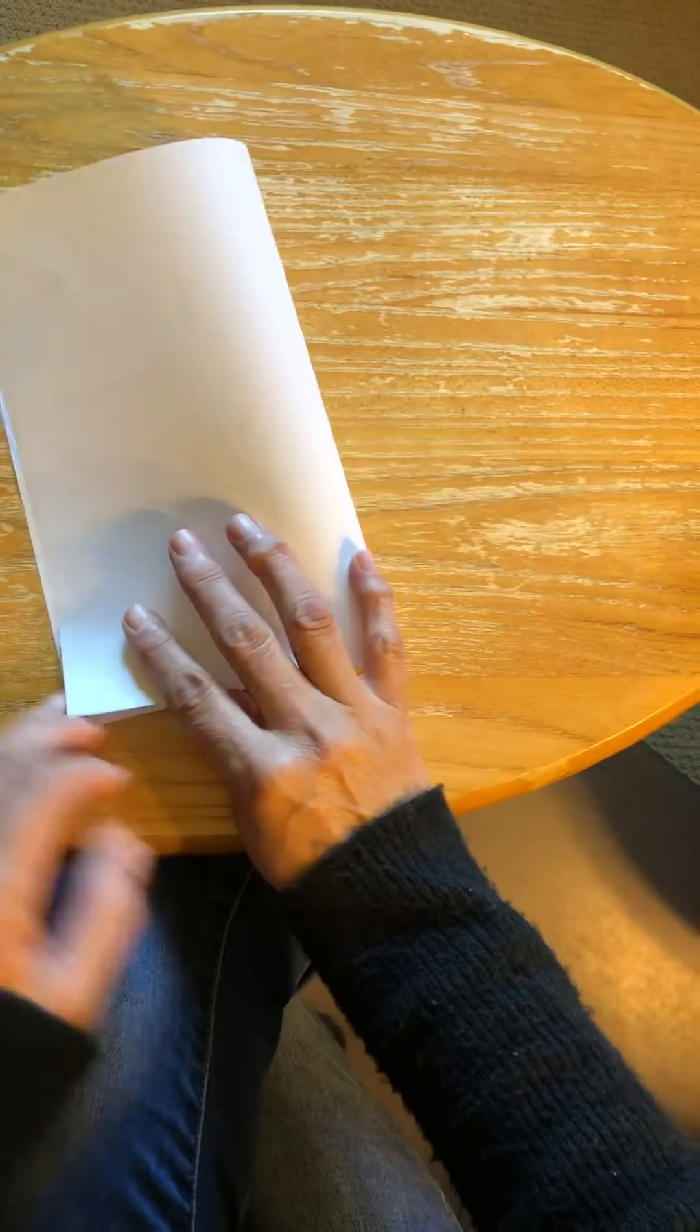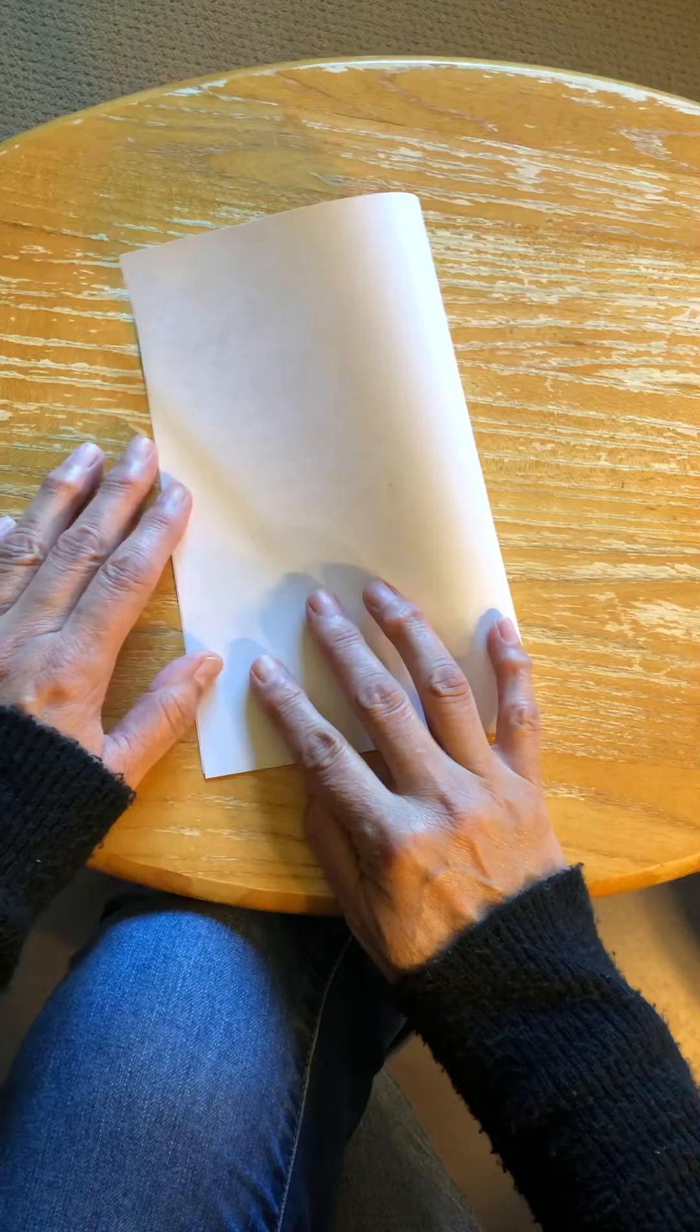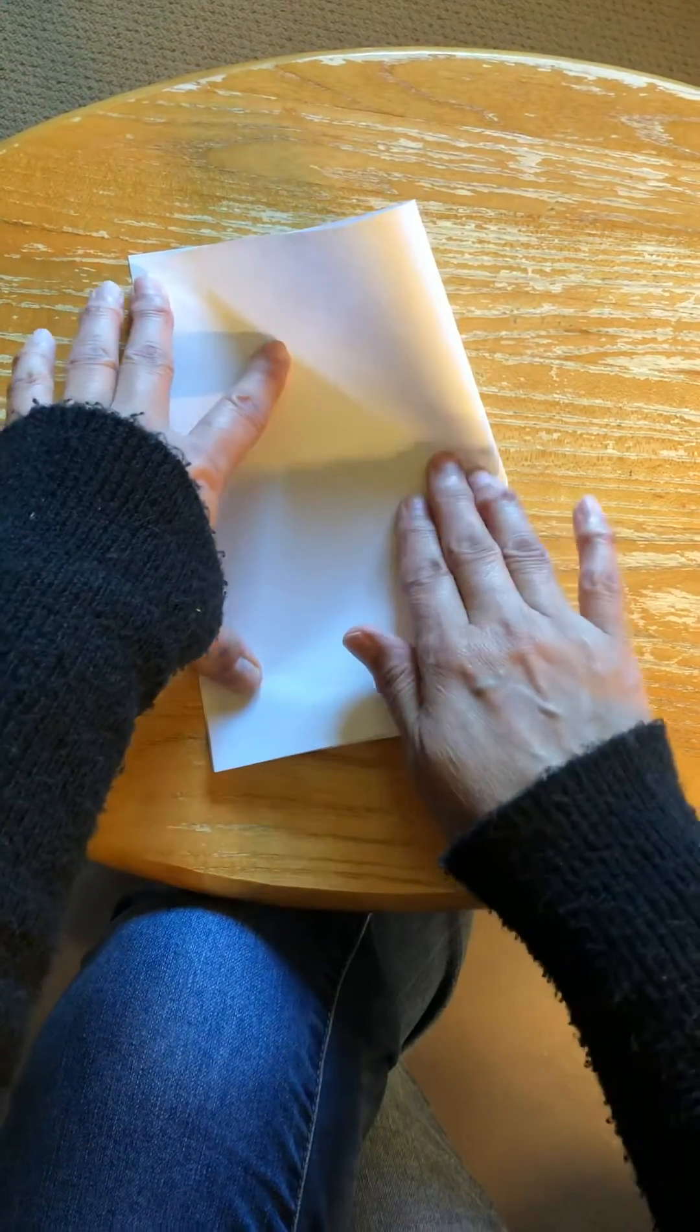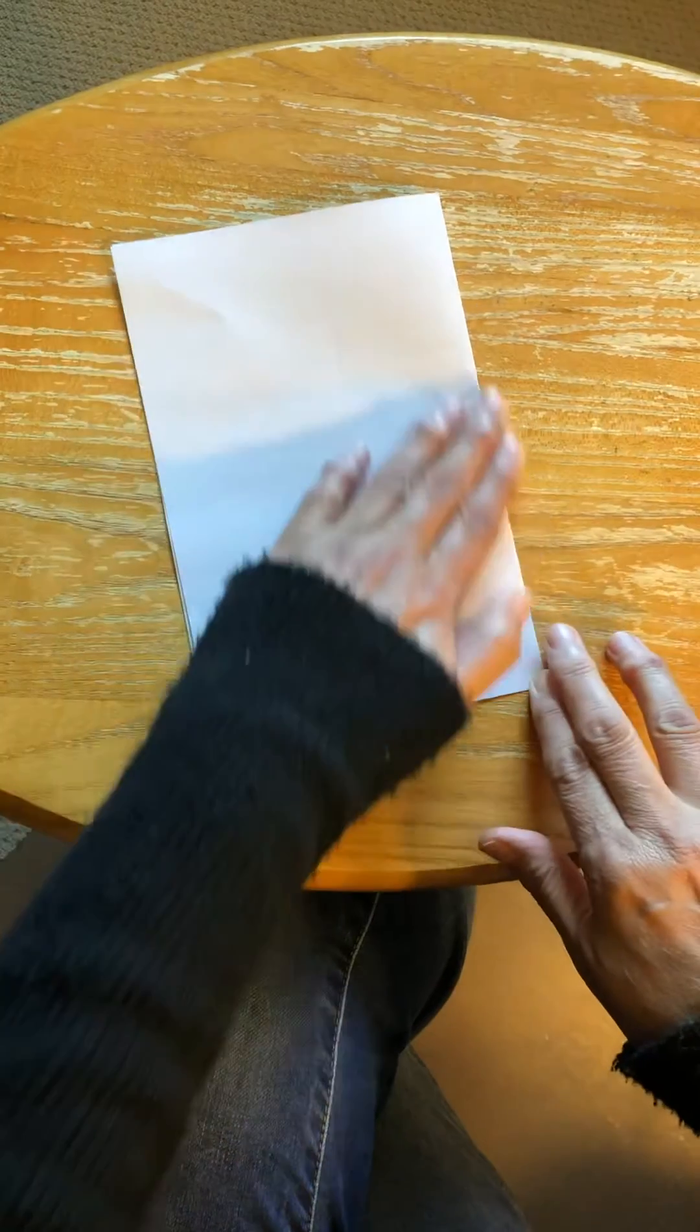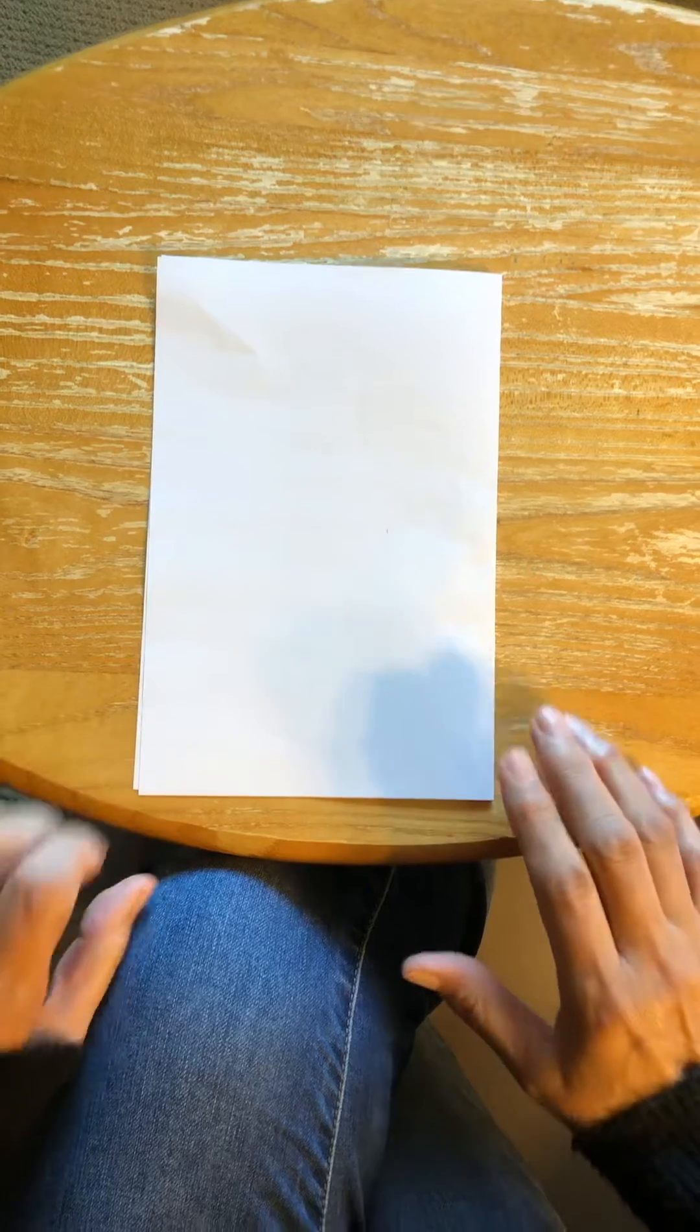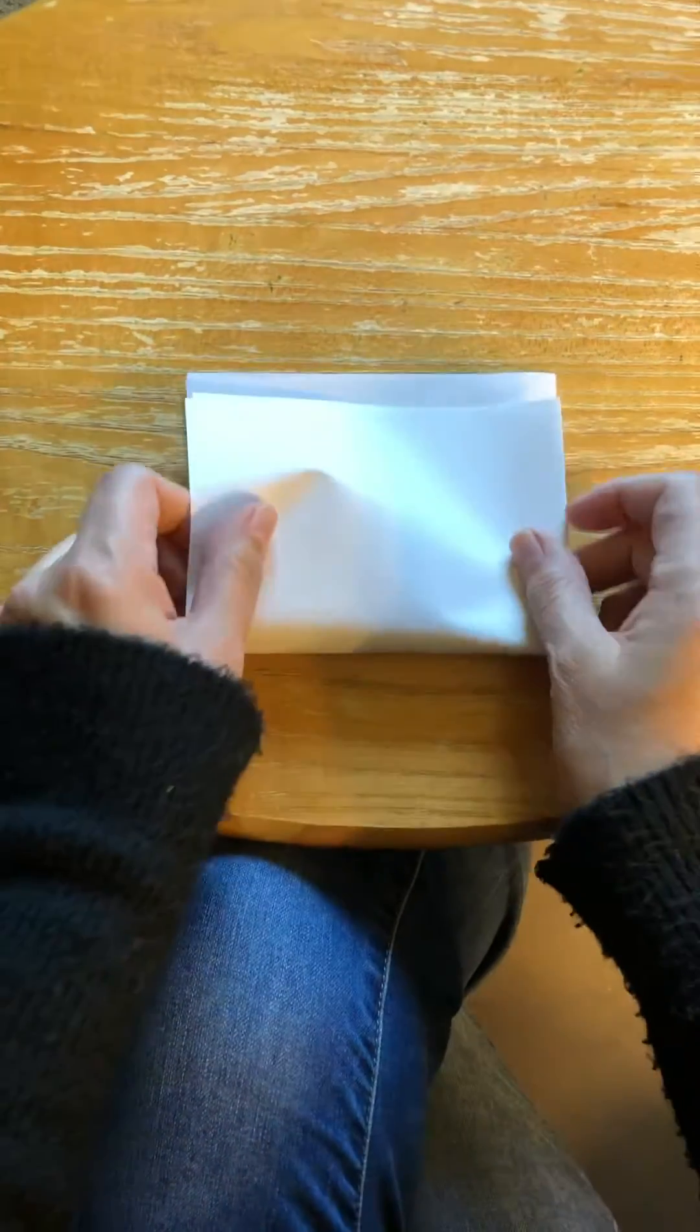It could be any paper - scratch paper, clean paper, any piece of paper. So what you want to do first is fold it and make sure it's pretty even. We call this folding it hamburger style. And then you're going to fold it again.